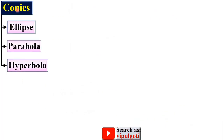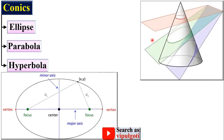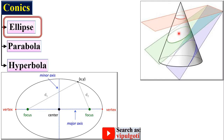Let us start from the first group, conics, beginning with the ellipse. In this figure you can see that if the cone is cut by a section plane at different positions, you will get different shapes. This shape here is the ellipse.